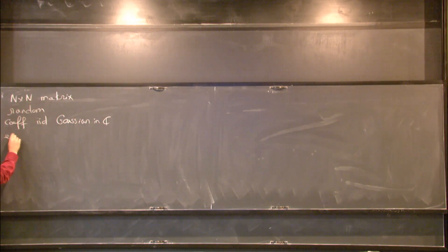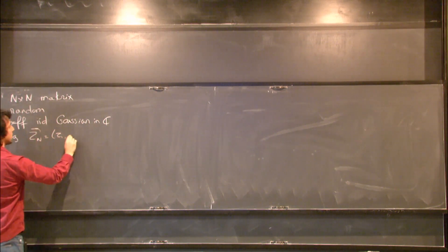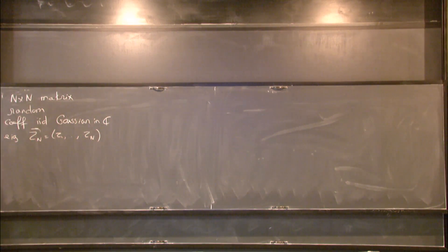So I get n eigenvalues, Z_n. So with probability one, you get n distinct eigenvalues.